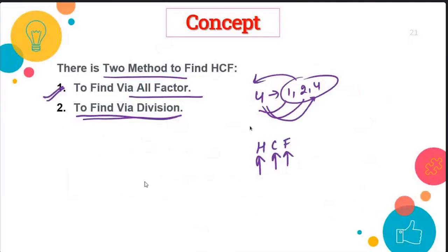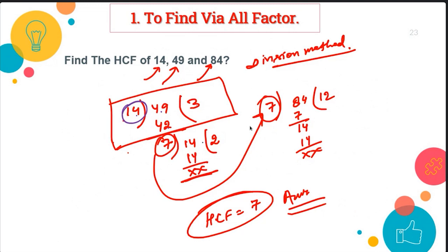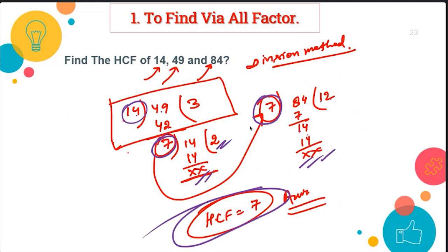Now let's look at the second method: finding HCF via division. We'll find the HCF of 14, 49, and 84. Start with the smallest number, 14, and divide 49 by 14. We get quotient 3 and remainder 7. Now the divisor 14 becomes the new dividend and 7 becomes the divisor. 7 divides 14 exactly 2 times with remainder 0. Then 7 divides 84 exactly 12 times. So the HCF is 7.